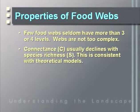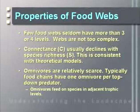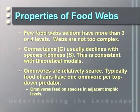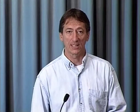As species richness increases, the connectance between any two species diminishes because more connections are possible, providing ecosystem stability. Omnivores are relatively scarce — typically only about one omnivore per major predator. Omnivores feed on species at multiple trophic levels and can greatly modify the dynamics expected from trophic levels within an ecosystem.